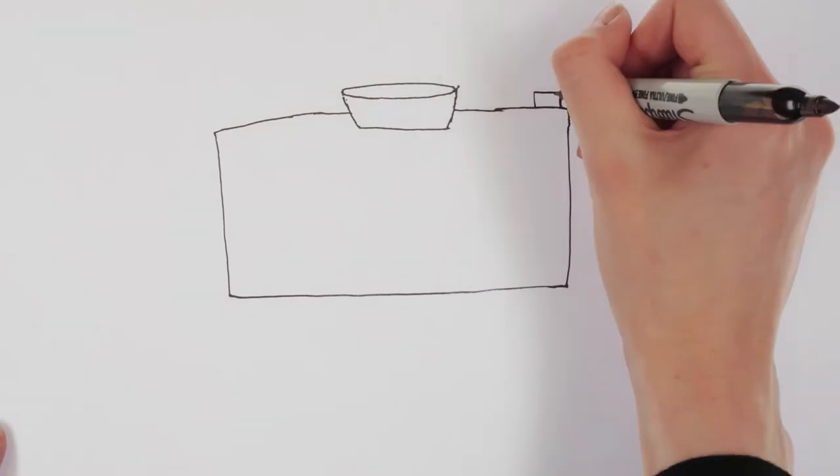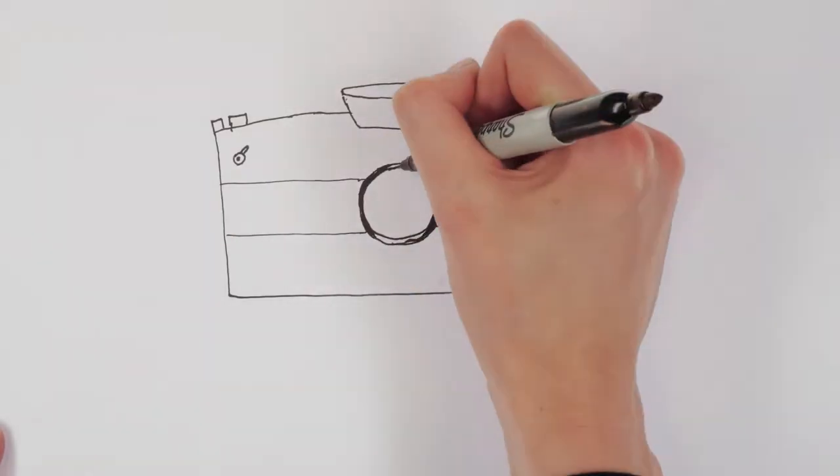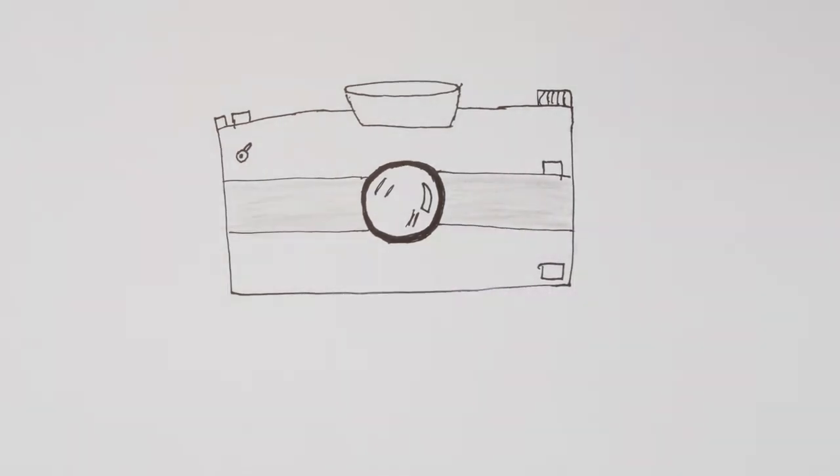Our eyes are very smart and act like an autofocus camera system capable of automatically focusing on objects that are placed at different distances.